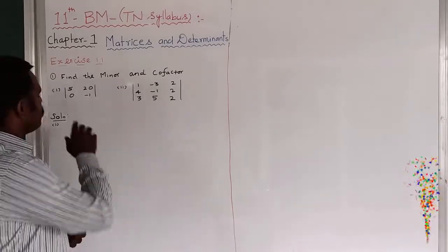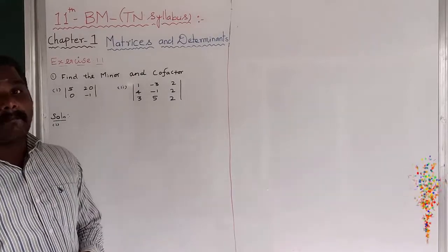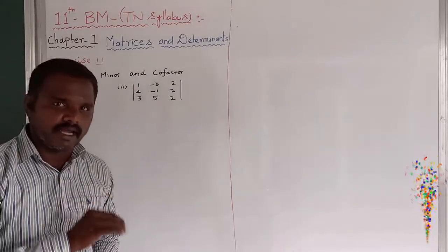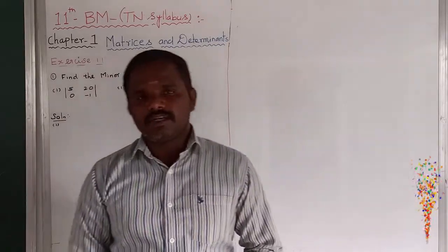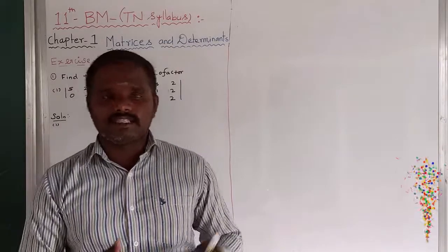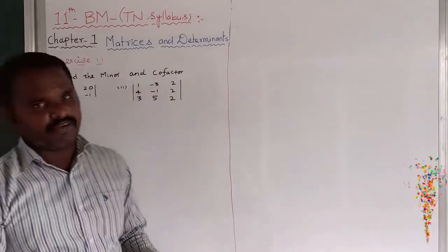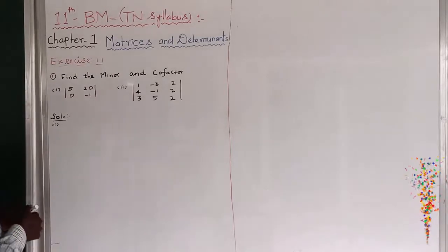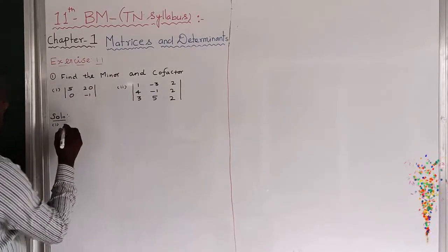They have given the 2 by 2 matrix: 5, 20, 0, minus 1. So find the minor and cofactor. First you have to find out the minor, then you have to find the cofactor, because we must know the cofactor formula. We must know what is the minor of the determinant. So first I want to find out the minor of the first determinant.